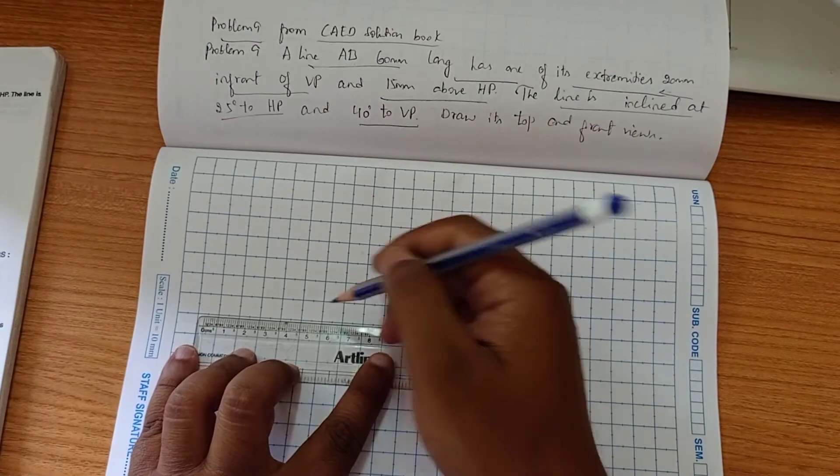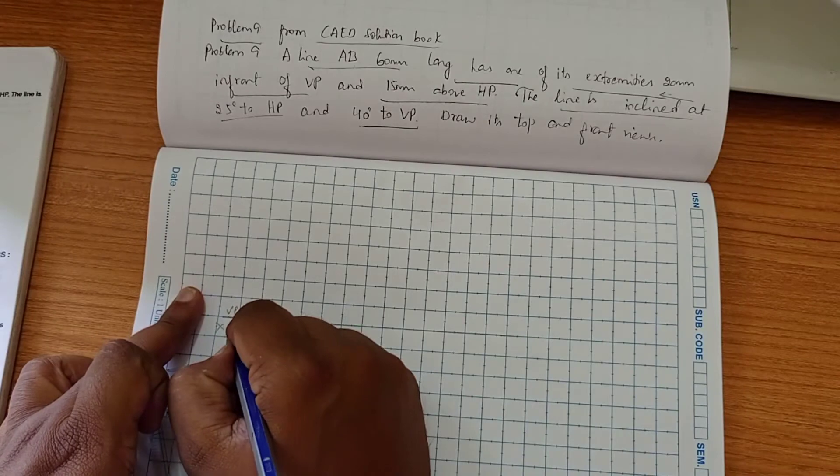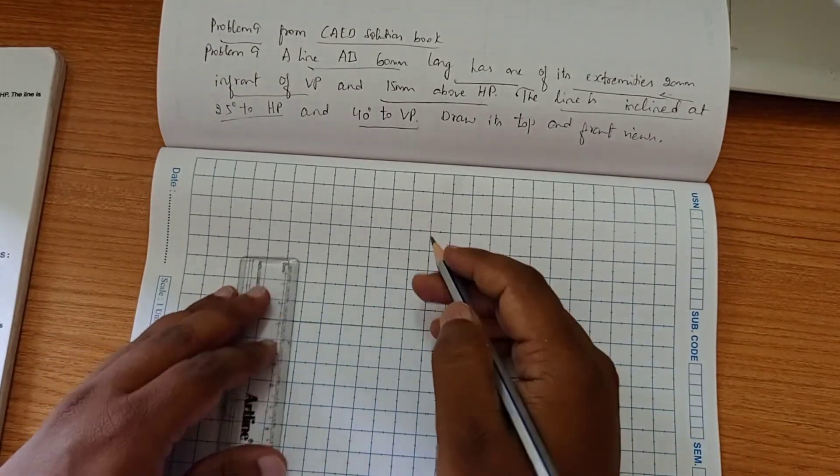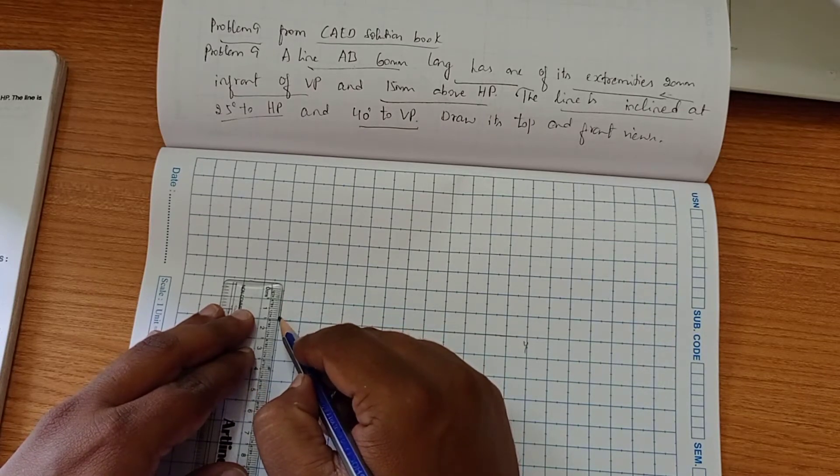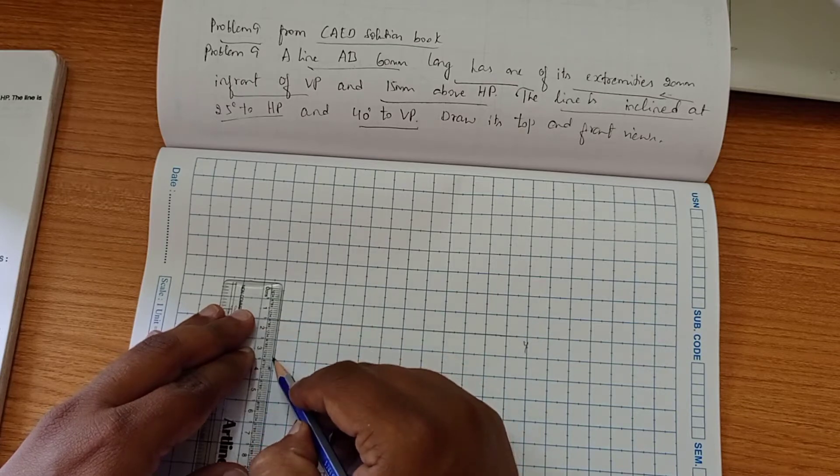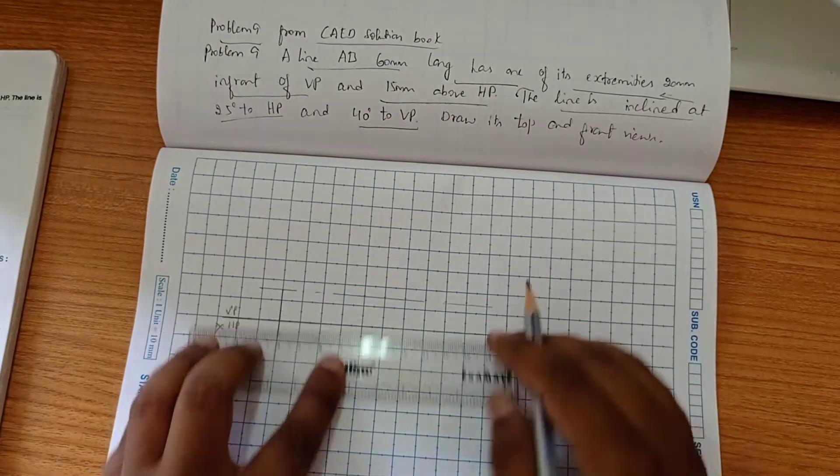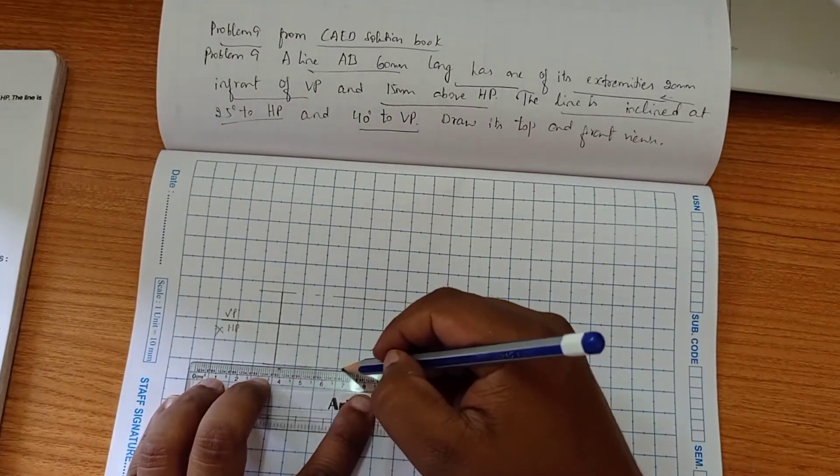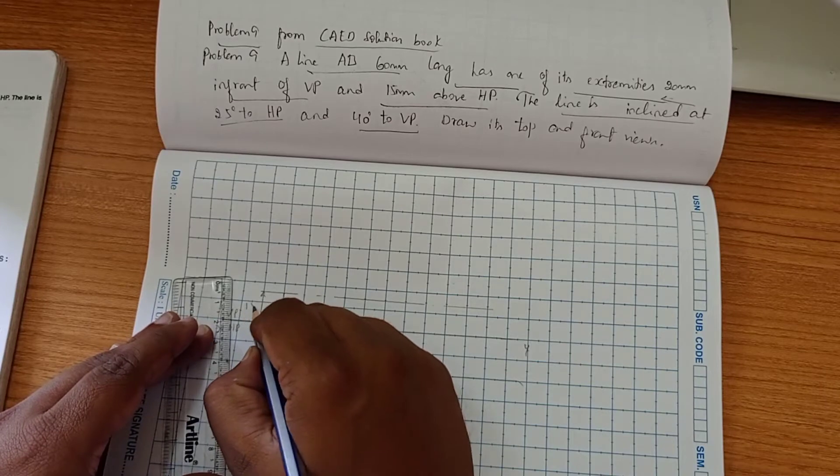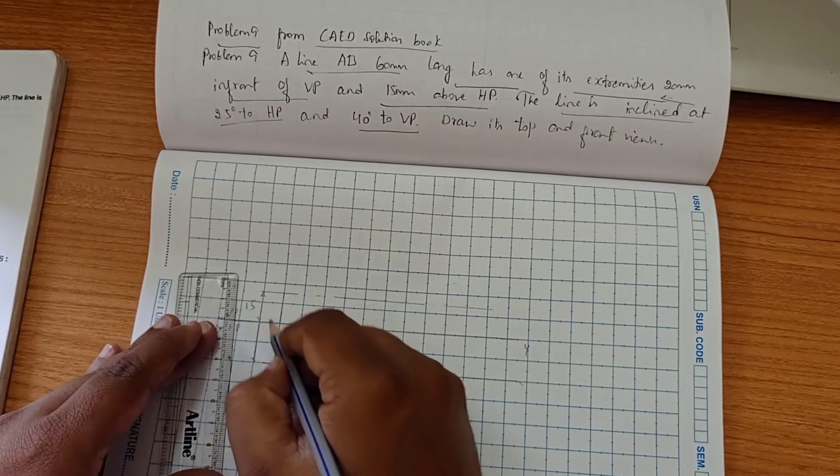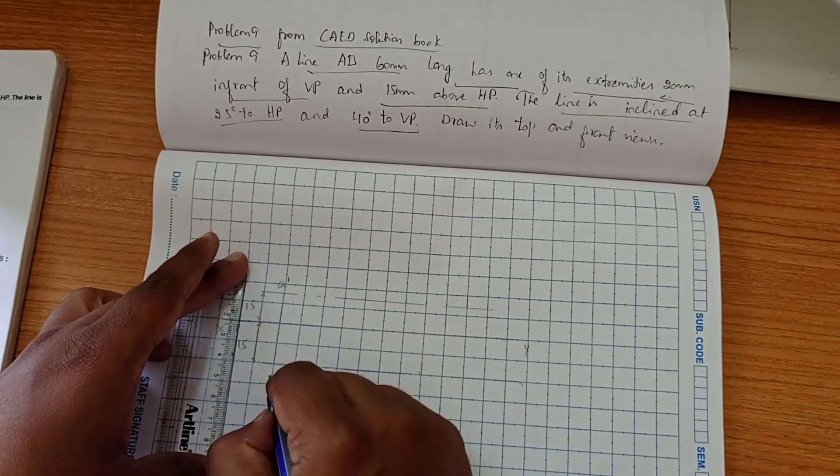First I am going to draw the XY line here. VP, HP and Y. The end point is 15 mm above HP and 20 mm in front of VP. So we are going to draw the reference. This is 15 and this is 20. This is A dash and this is A.